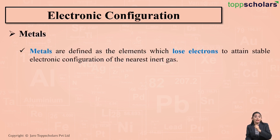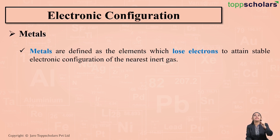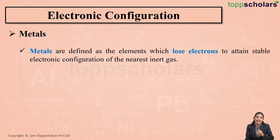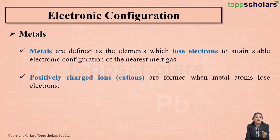Metals are the elements which lose electrons in order to attain the stable electronic configuration of the nearest inert gas. So what do metals do in order to become stable? They lose electrons. On losing electrons, they attain the stable electronic configuration of the nearest inert gas. When metals lose electrons, they form positively charged ions, that is cations.